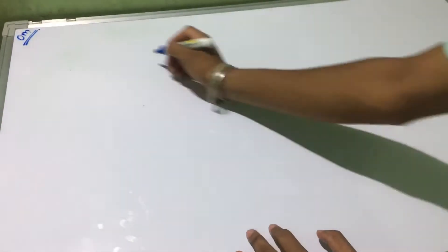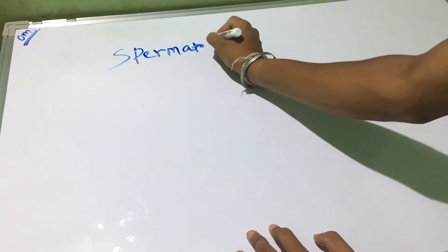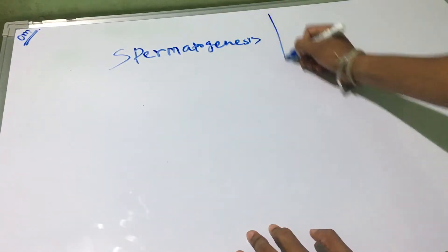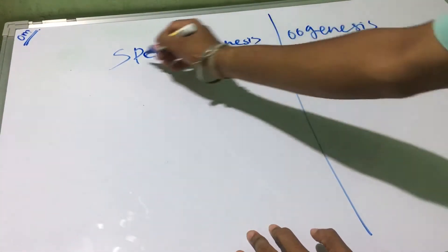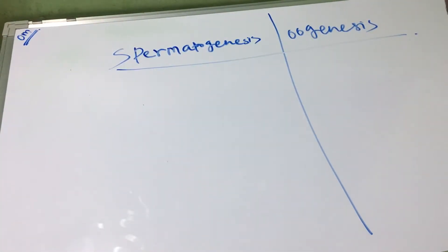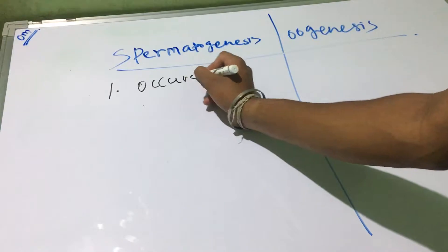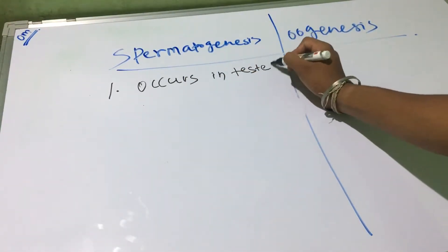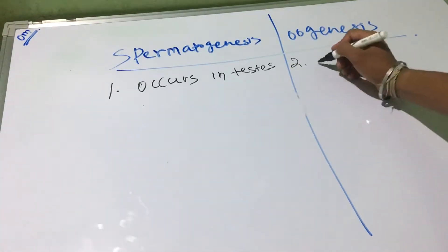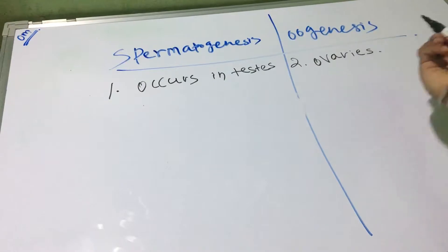Hello friends. In this previous video I have already explained about spermatogenesis and oogenesis, and in this video I am just going to simply differentiate between spermatogenesis and oogenesis, so that it is easy to understand. In case of spermatogenesis, it occurs in testes, and in case of oogenesis, it is the process which occurs in the ovary.